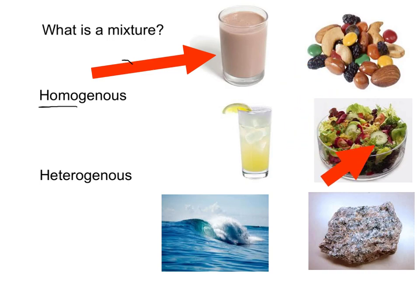Let's take a look at a salad. Let's say you didn't want cucumbers in it — you could take just the cucumbers out by physical means. That's important when talking about the difference between heterogenous and homogenous. Number one, homogenous means everything is evenly distributed throughout. Heterogenous means things are not evenly distributed throughout. Yet for both, you can take them apart by physical means.